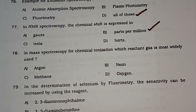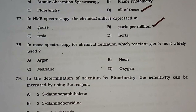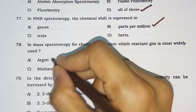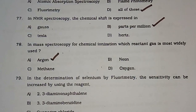Question number 78: In mass spectroscopy for chemical ionization, which reactant gas is most widely used? Options are argon, neon, methane, or oxygen. Option A — argon — is the correct answer.